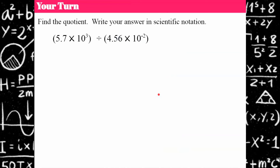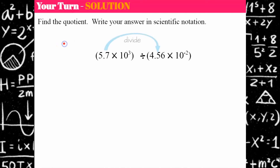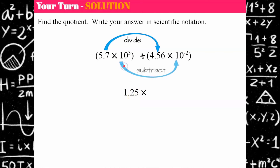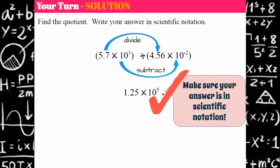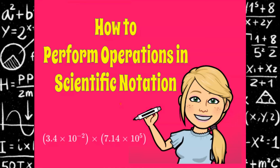Your turn — find the quotient. Welcome back. 5.7 divided by 4.56 gives 1.25. Then we subtract the exponents: 3 minus negative 2 is positive 5. Check to see if it's in scientific notation — and it is. So our quotient is 1.25 times 10 to the fifth. I hope this gave you some information about performing operations in scientific notation, and I hope you'll come back and join me soon. Have a great day.